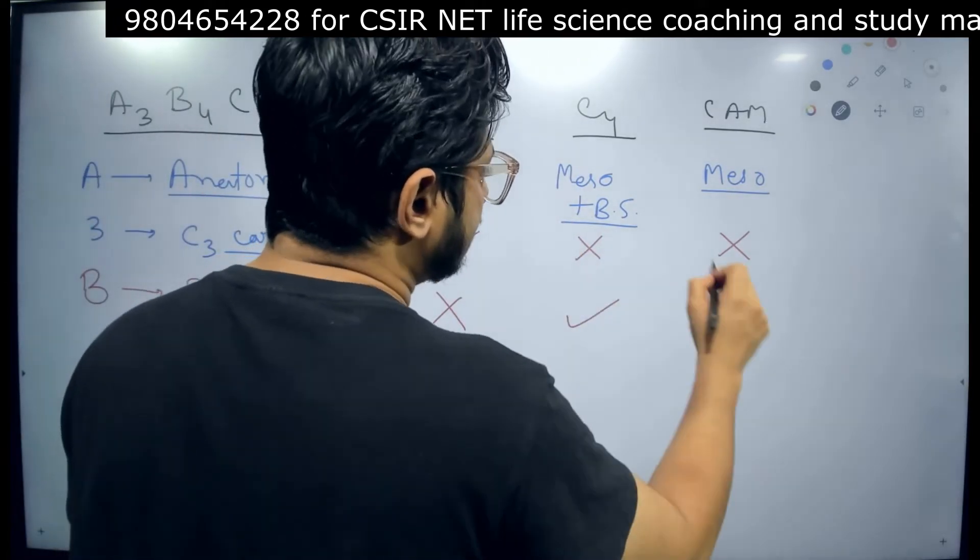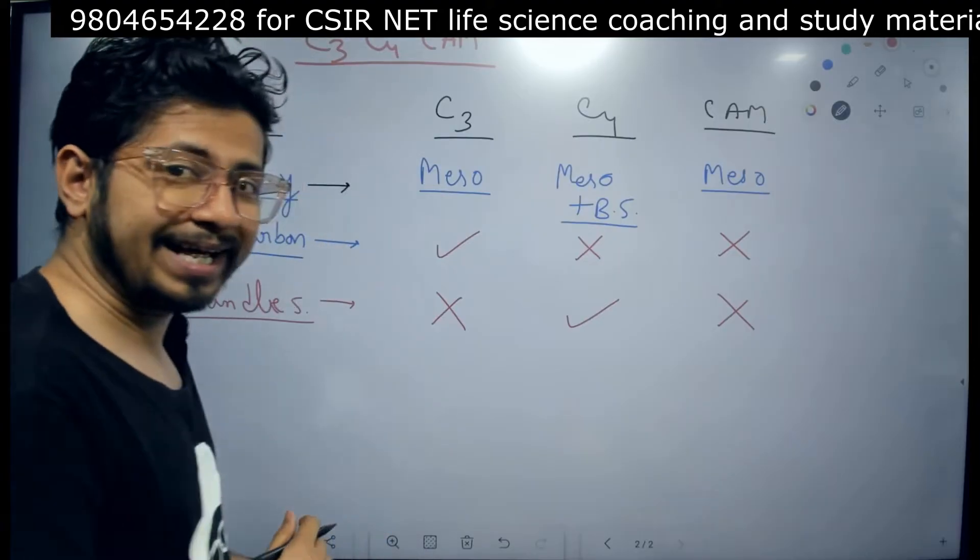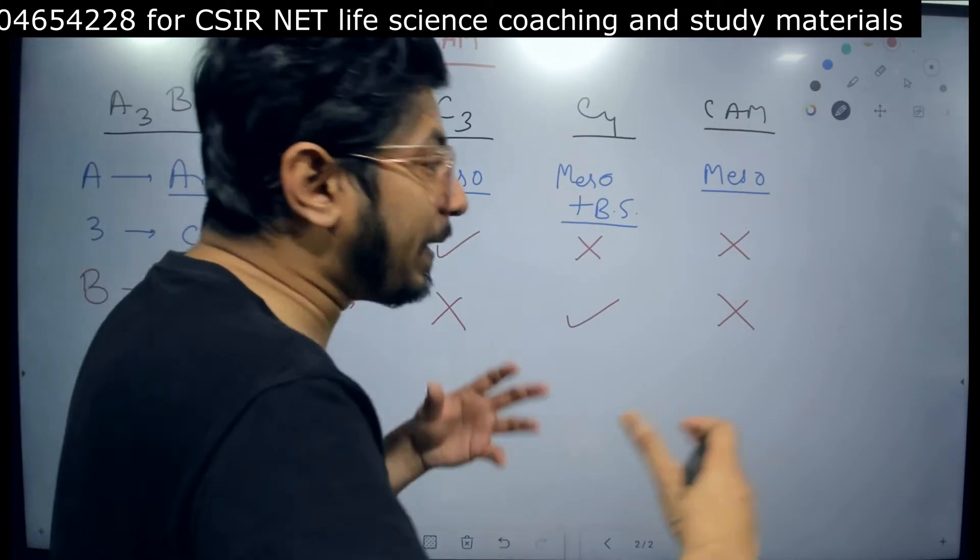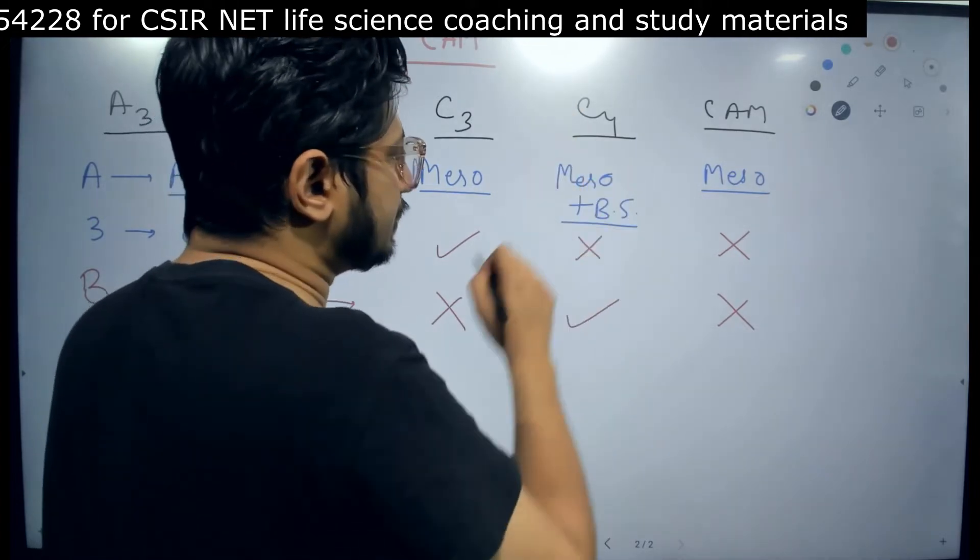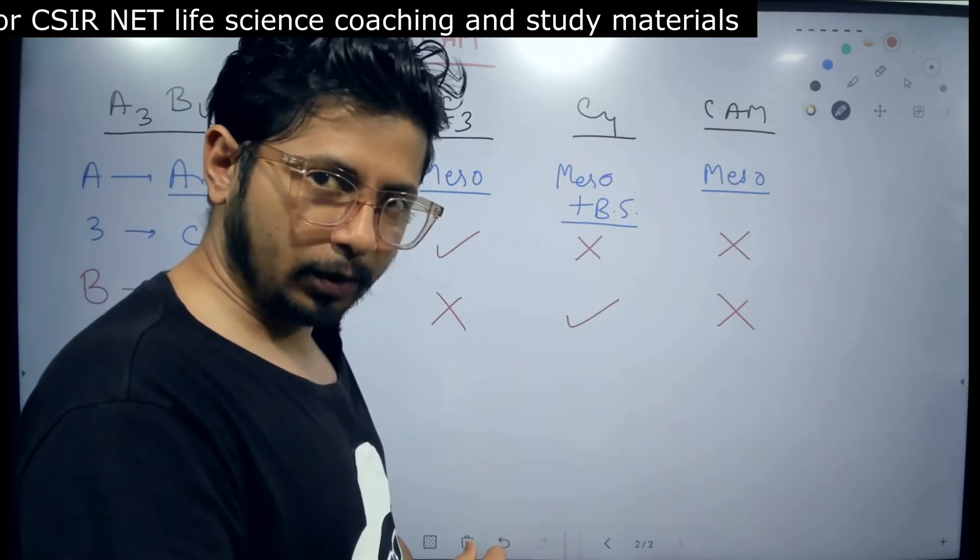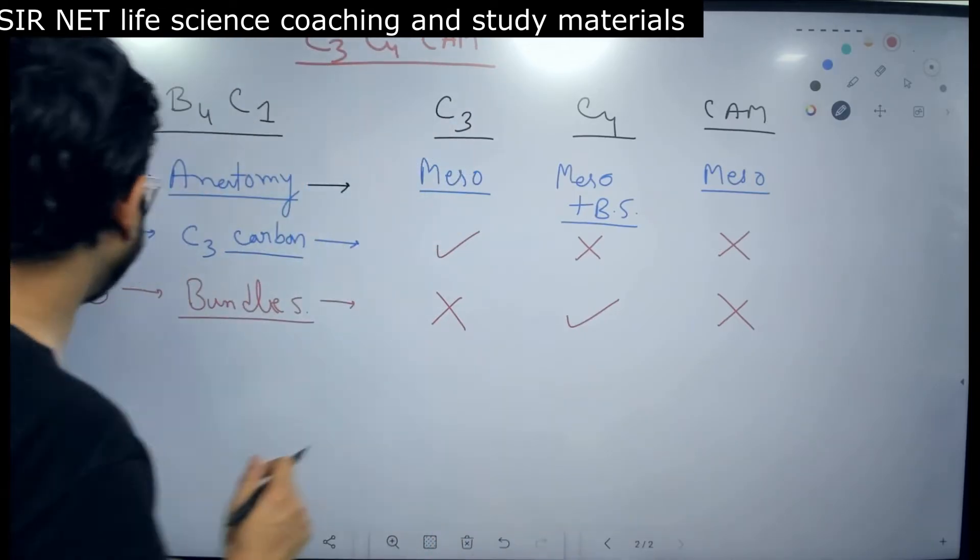In C4 we engage that. In CAM plants we don't engage that. But we have a spatial isolation in C4 plants. We need to separate it to the bundle sheath in order to carry out the process.